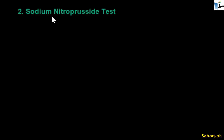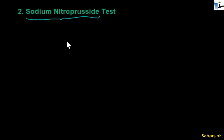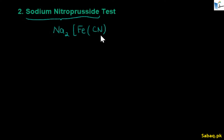Now let's move to the sodium nitroprusside test. In this test, we use sodium nitroprusside. Its formula is Na₂[Fe(CN)₅NO] — sodium is Na₂, iron (Fe) is the central metal ion, with five cyanide (CN) groups and a nitrosyl (NO) group.